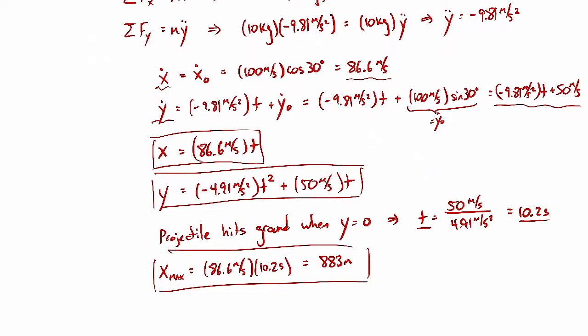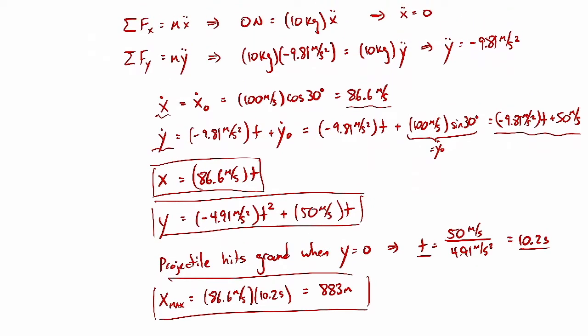So we've worked this problem out numerically. You can see there's a lot of writing involved — we have to keep track of all these numbers and make sure we don't make a mistake. It's a lot of writing and bookkeeping.